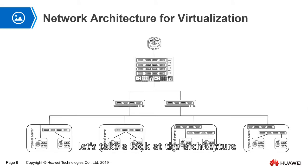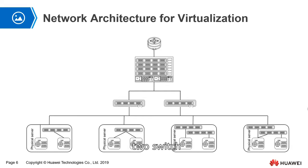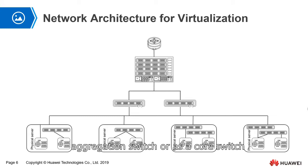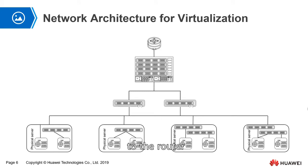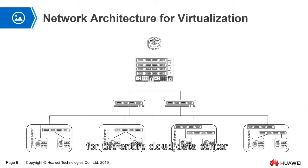Let's take a look at the architecture of the network in virtualization. The network architecture in most virtualization solutions is familiar. The bottom part is the physical server, which is connected to a layer 2 switch. This layer 2 switch is used as an access switch. Then the layer 2 switch goes up to a layer 3 switch, which can act as an aggregation switch or as a core switch. Then the layer 3 switch goes up and connects to the router. If you ignore the firewall, IDS, IPS, and other security devices, the router connects directly to the internet, meaning the router is the exit for the entire cloud data center.